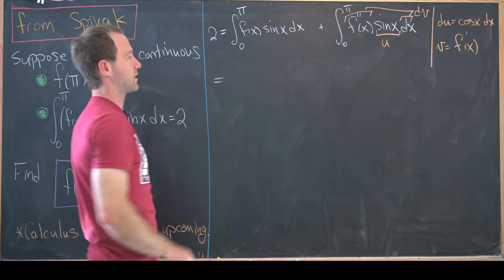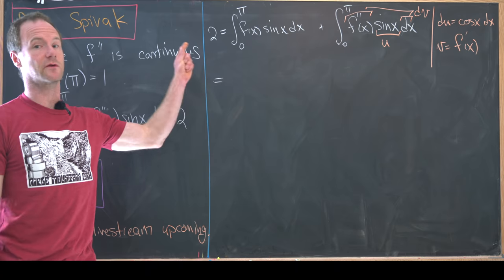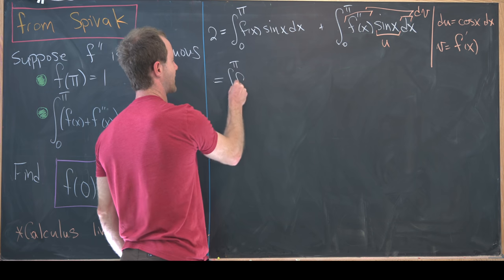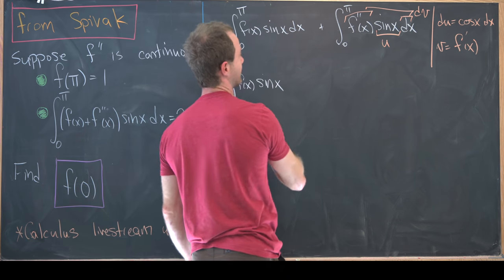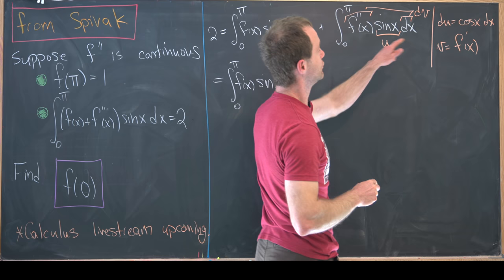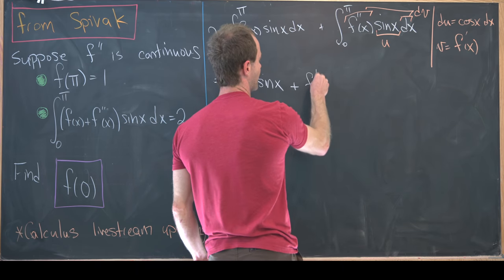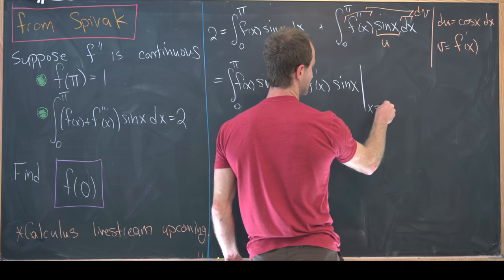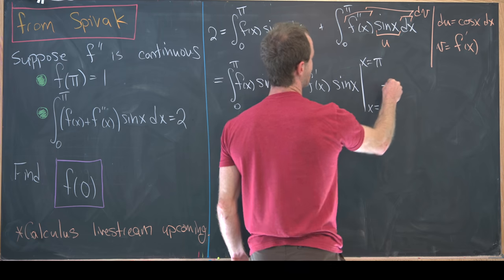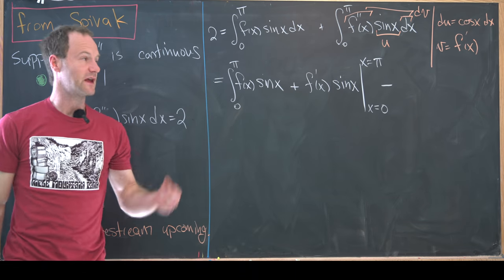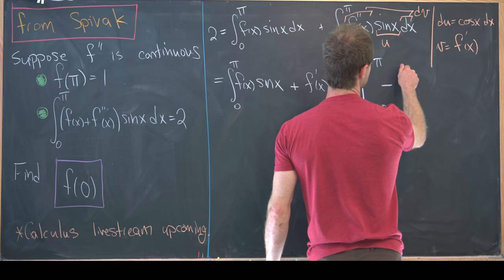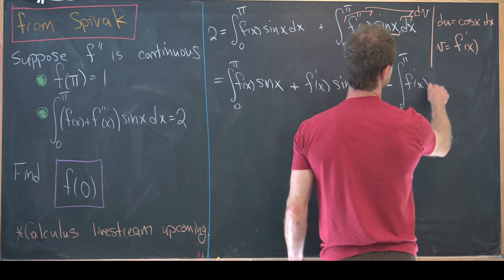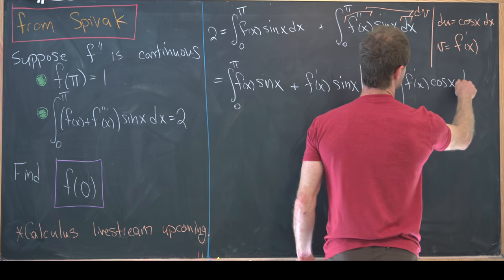Now applying the integration by parts formula to the second integral, leaving the first as is, we'll have the integral from zero to π of f(x) times sin(x) plus uv. So that's going to be f'(x) times sin(x), evaluated from x equals zero to x equals π minus the integral of vdu. So that's minus the integral from zero to π of f'(x) times cos(x) dx.